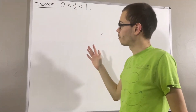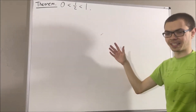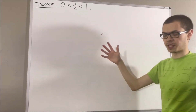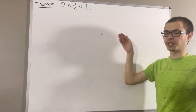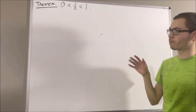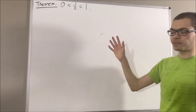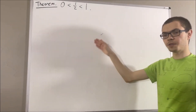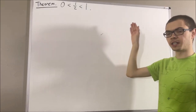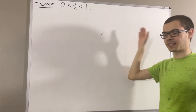In this series, we are using a list of 10 axioms for the real number system, and I'll leave that list of axioms in the description below. In this video, we are going to be using axioms 1, 4, 6, and 7.